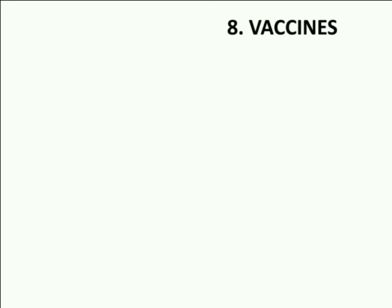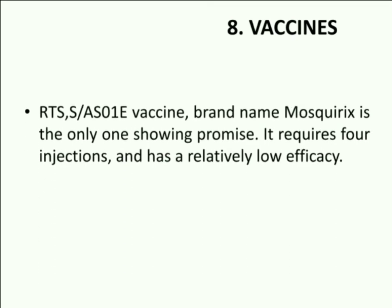The eighth category includes vaccines. The development of an effective vaccine always remains one of the most frustrating aspects in the prevention of malaria. It is well known that Plasmodium parasite evokes an immune response, but the problem seems to be identifying the antigenic component or components that cause a strong immune response. A vaccine whose brand name is Mosquirix is the only one showing promise; it requires four injections and has a relatively low efficacy.